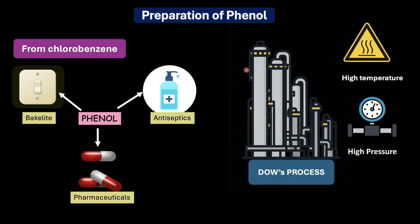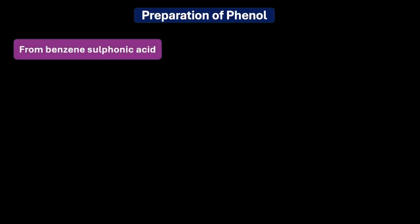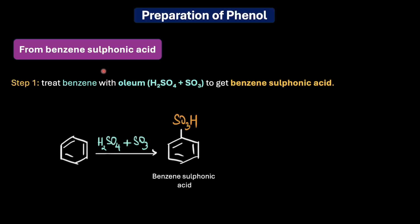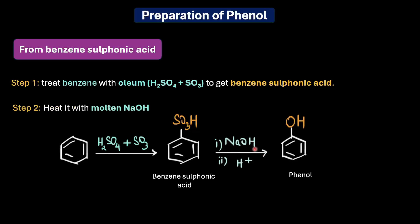Next up — benzene sulfonic acid. The first step is to prepare benzene sulfonic acid by reacting benzene with oleum (H₂SO₄ + SO₃), a very concentrated mixture. This gives us benzene sulfonic acid. The next step is to heat it with molten sodium hydroxide, which eventually gives us phenol.